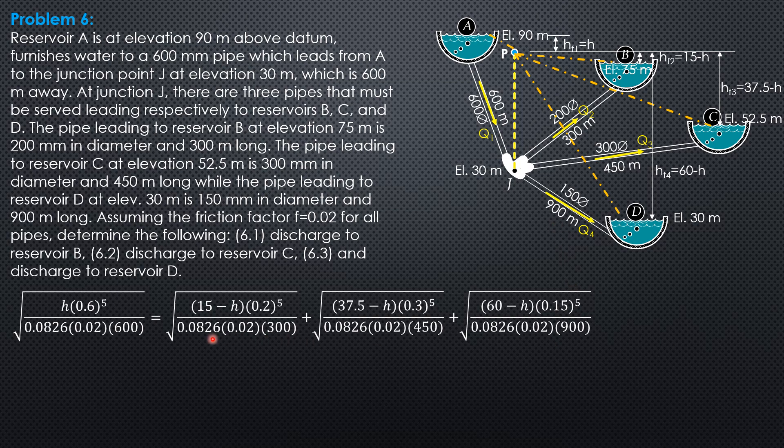Although you can cancel 0.0826 and 0.02, let's just leave it this way so that all these decimal formulas will be the actual discharge. Simplifying: 0.0801 square root of H equals 0.02541 square root of 15 minus H plus 0.05717 square root of 37.5 minus H plus 0.007147 square root of 60 minus H.